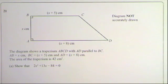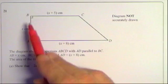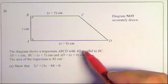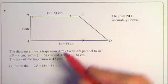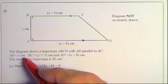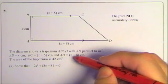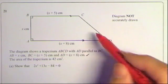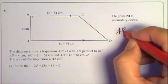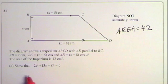Question 21 looks complicated but let's take it step by step. The diagram shows a trapezium ABCD where AD is parallel to BC. AB equals x, BC equals x + 5, AD equals x + 8 — all marked on the diagram. The area of the trapezium is 42; that's not on the diagram so I'll note it separately.